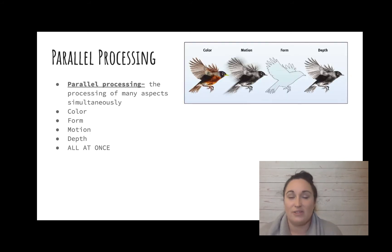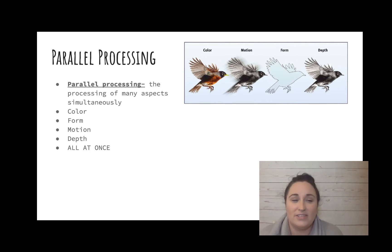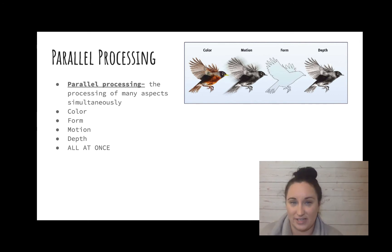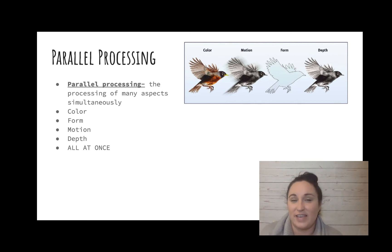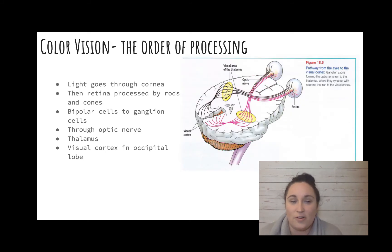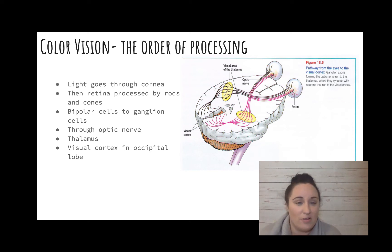Parallel processing is the idea that we process many aspects of vision simultaneously — color, form, motion, and depth all at once. To repeat the order: light goes through the cornea, then the retina is processed by the rods and cones, to the bipolar cells, the ganglion cells, through the optic nerve, then the thalamus, and then the visual cortex.